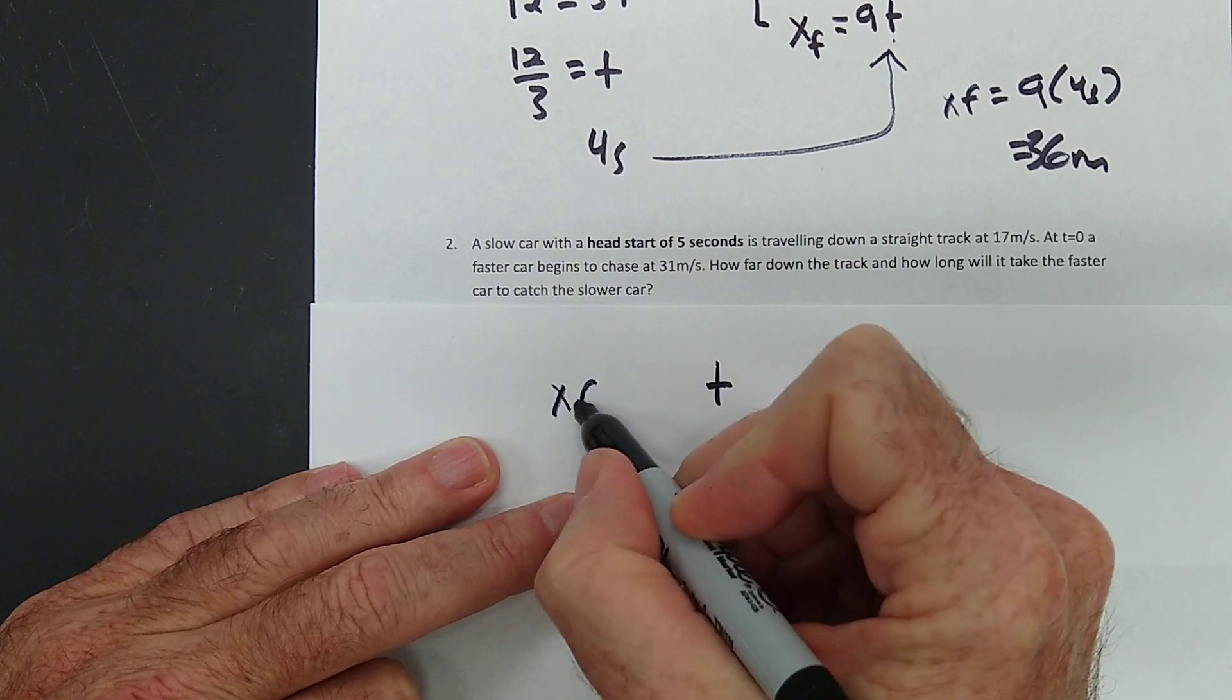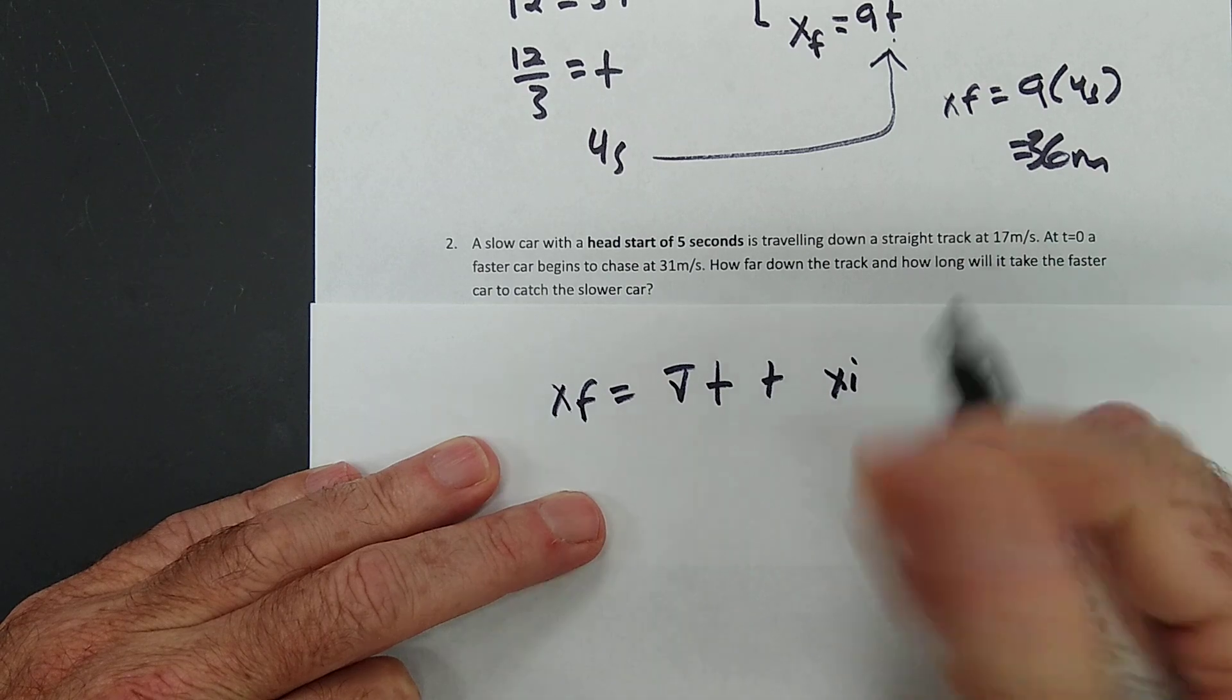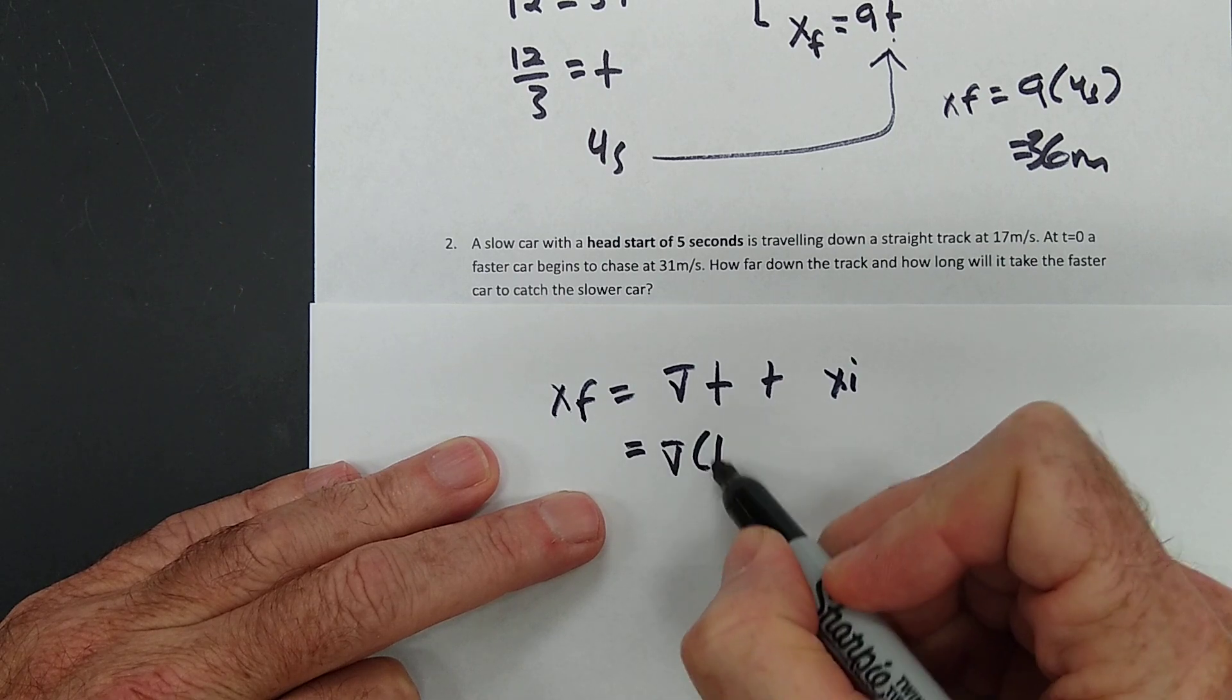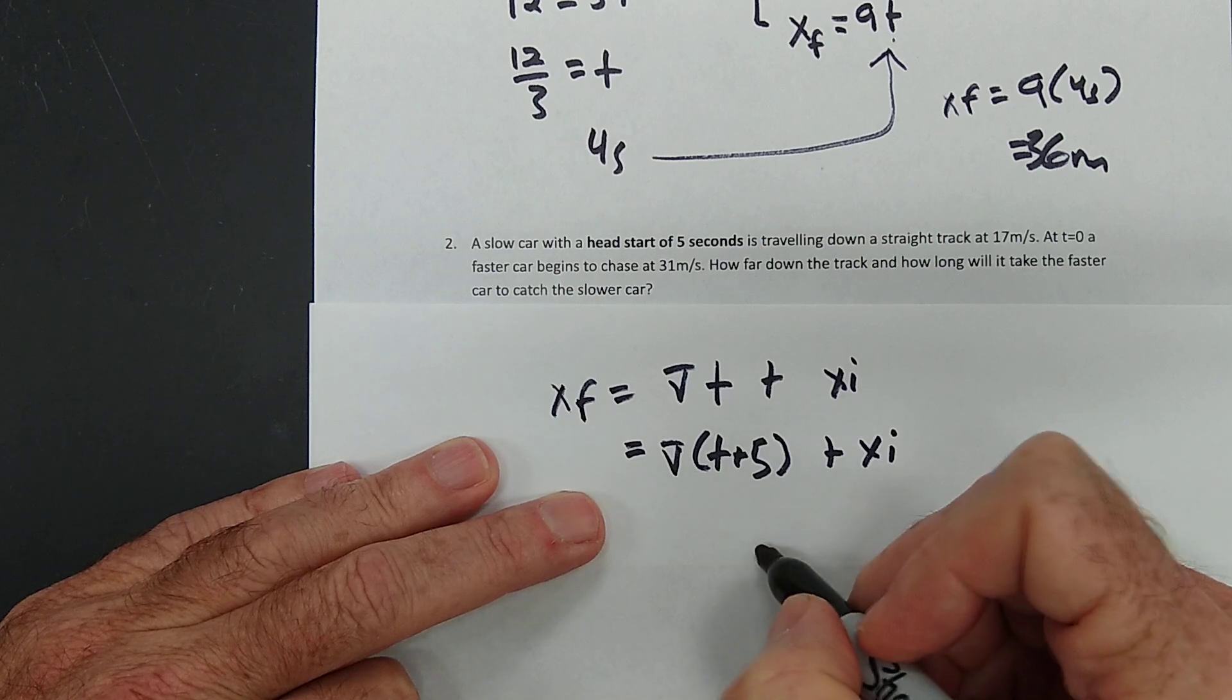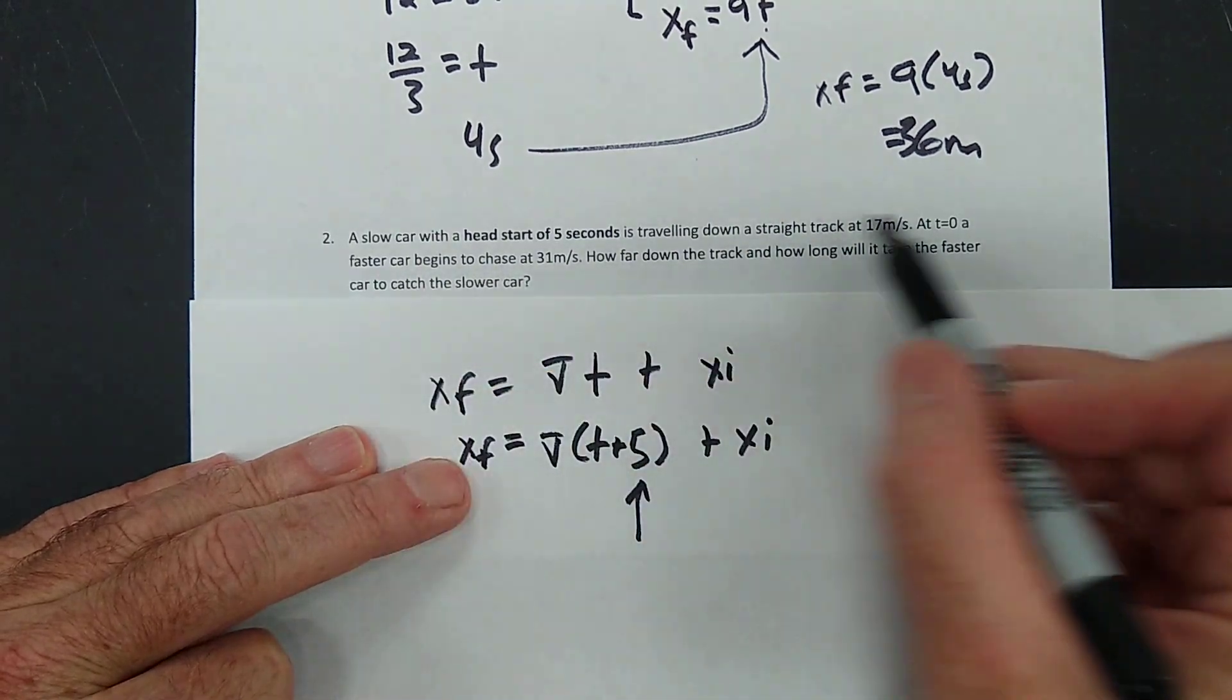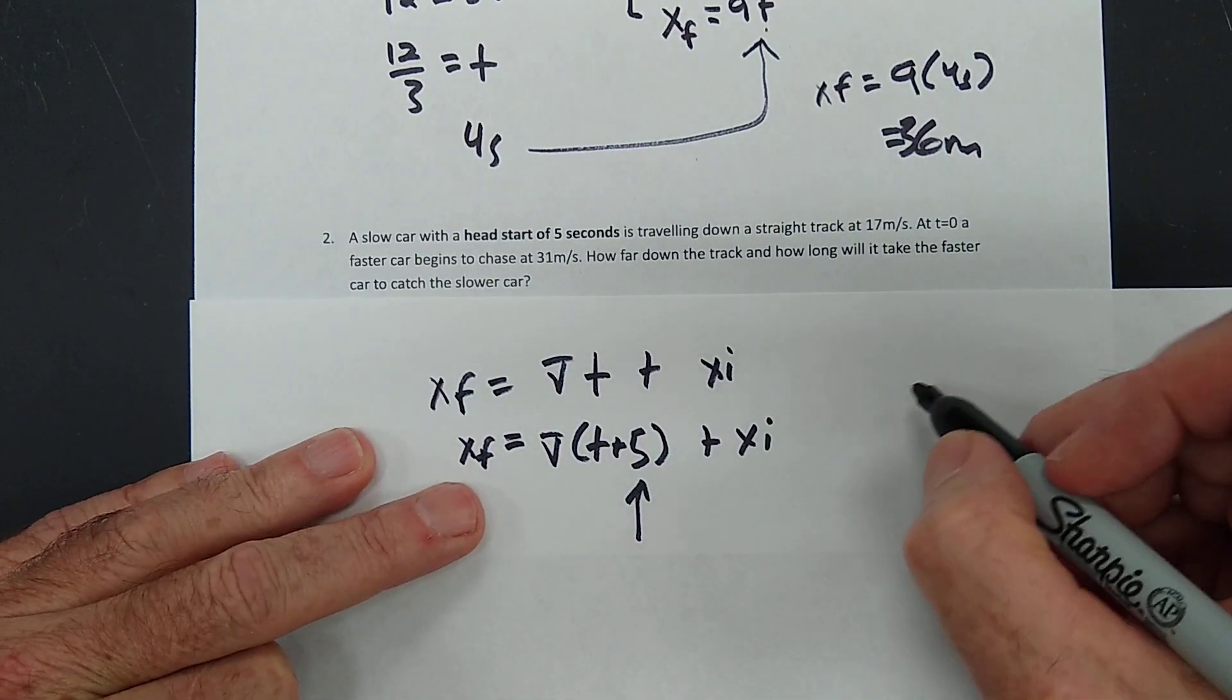We're looking at XF equals VT plus XI. Don't worry about that bell, people. Its time is going to be V times T plus 5 plus XI. See, it's got an extra 5 seconds. Does that make sense?